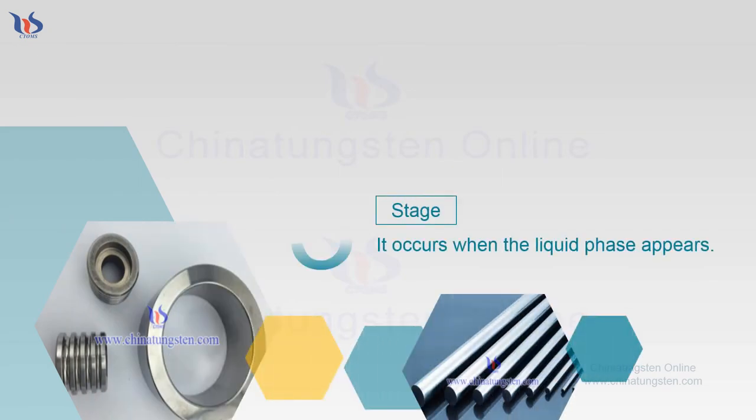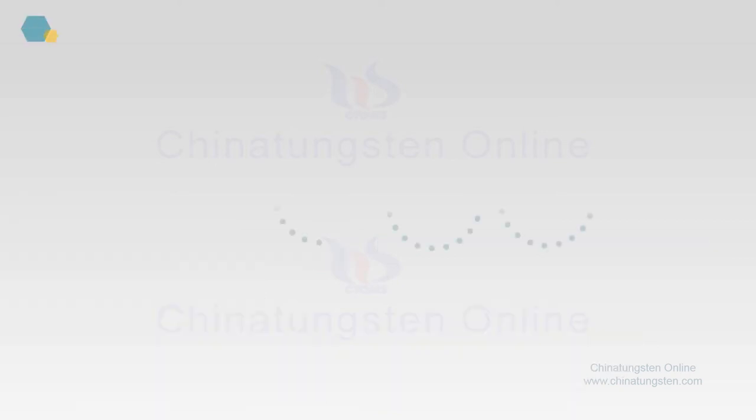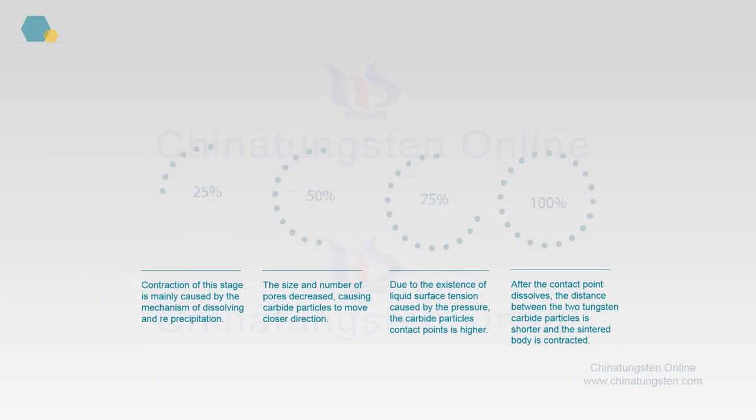The third stage occurs when the liquid phase appears. Contraction of this stage is mainly caused by the mechanism of dissolving and re-precipitation. The size and number of pores decreased, causing carbide particles to move closer together.